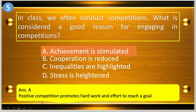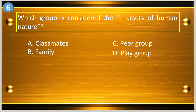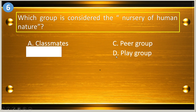Positive competition promotes hard work and effort to reach a goal. Question number six: which group is considered the nursery of human nature? A, classmates; B, family; C, peer group; and D, play group. The answer is letter B, family.